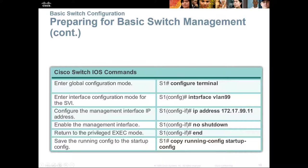Here we're setting up VLAN 99 as an alternate. You assign an IP address, then enter 'no shutdown' to turn on the interface. That brings you back to user exec mode. Save the configuration by doing 'copy running-config startup-config.' That is the basic process for assigning an IP to a virtual interface.